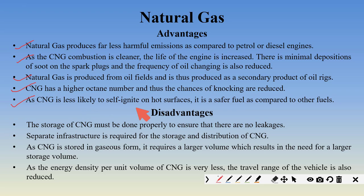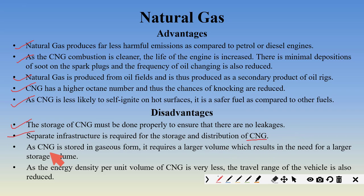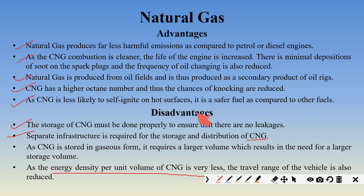The main disadvantages of CNG are its storage and transportation. Storage must be proper to prevent leakages. A separate infrastructure is required for CNG distribution — just as there are petrol and diesel pumps, separate CNG pumps must be established. As CNG is stored in gaseous form it requires much larger volume, and the energy density per volume of CNG is also very low, reducing the range the vehicle can travel. CNG can only be used where large numbers of CNG stations are available.